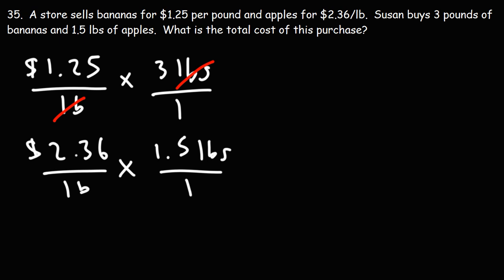Let's do long multiplication. We're going to multiply a decimal number by a whole number. We have 1.25 times 3. 3 times 5 is 15, carry over the 1. 2 times 3 is 6, plus 1, that's 7. 1 times 3 is 3. Notice that we have two numbers to the right of the decimal, so we're going to have two numbers to the right of the decimal at the end. It's going to be 3.75. That's going to be the cost of the three pounds of bananas, $3.75.